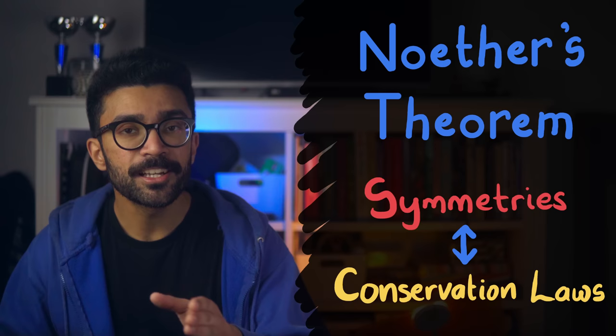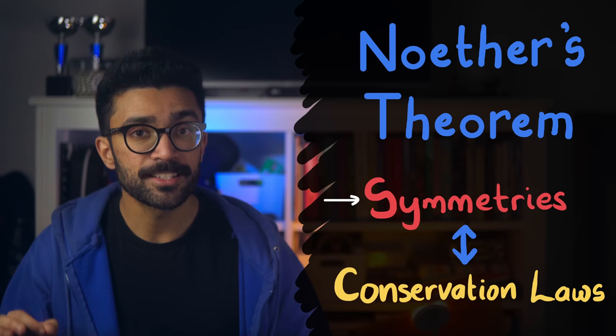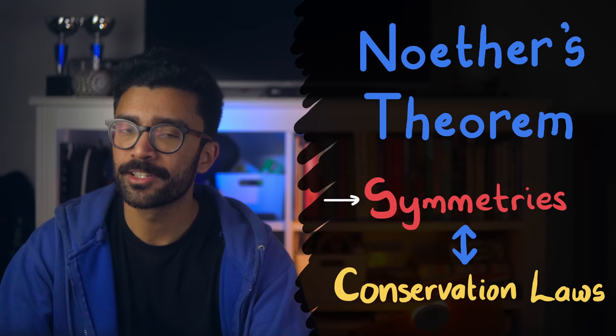For the purposes of this video, any system that we're studying has a type of symmetry if it behaves in the same way even when we change something about the system. For example, let's imagine we've got a ball hanging out in deep outer space. We're using outer space just to keep things simple so we don't have to account for gravity or any of the other forces acting on the ball. Now here's the thing, the ball will show many different kinds of behavior depending on what we do to it, right?